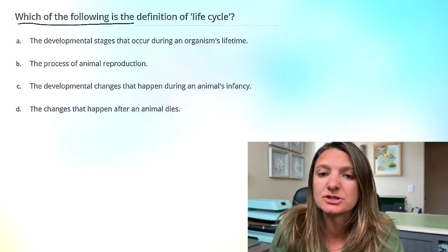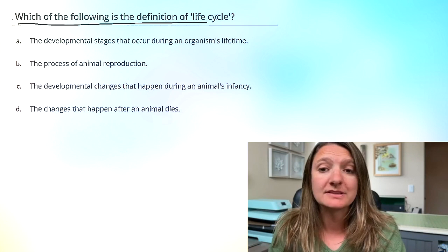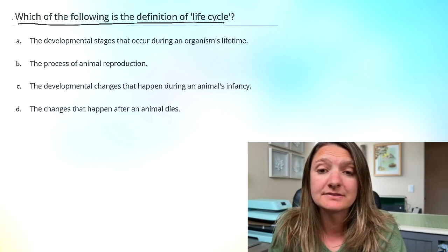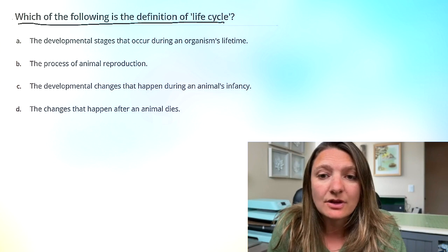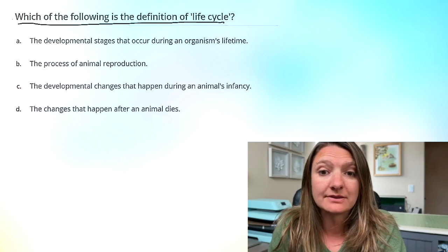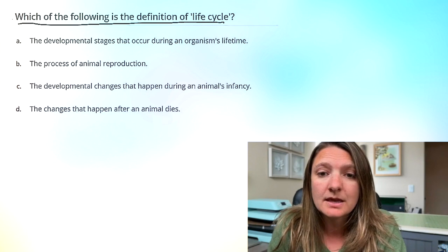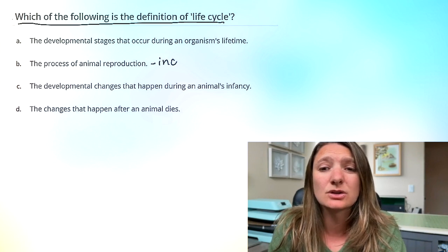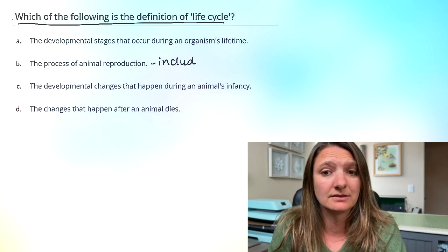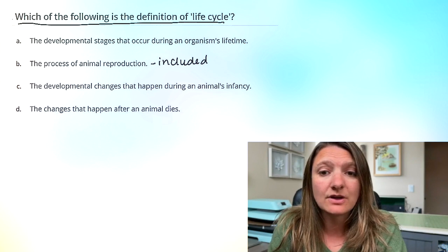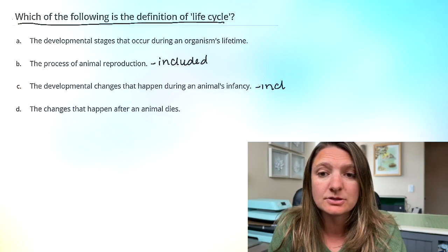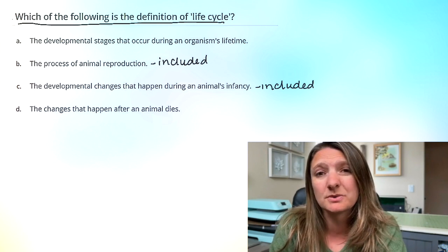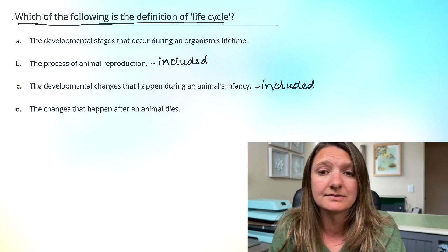Let's go over the first question: Which of the following is the definition of life cycle? A, the developmental stages that occur during an organism's lifetime. B, the process of animal reproduction — this is included in the life cycle. C, the developmental changes that happen during the animal's infancy — this is also included in the life cycle.